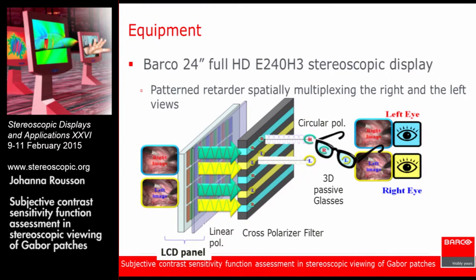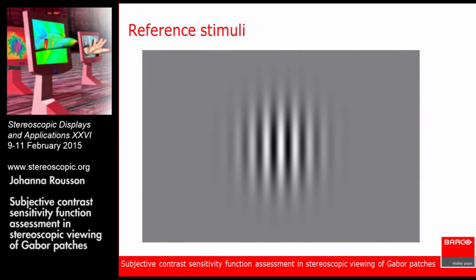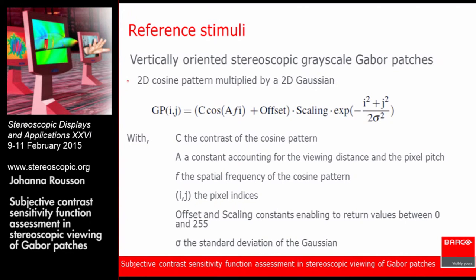For methods and materials, as equipment we used a Barco 24-inch Full HD display comprising a pattern retarder, specially multiplexing the right and left views. The stimuli we used is called a Gabor patch — a 2D vertically oriented Gabor patch, used throughout all experiments. The Gabor patch is the multiplication of a 2D cosine pattern with a dedicated frequency F and a dedicated contrast C, multiplied by a 2D Gaussian.